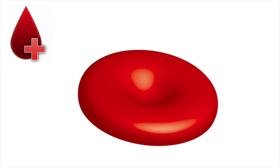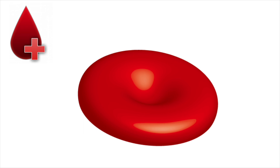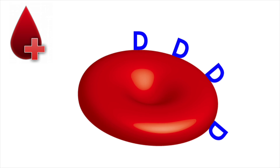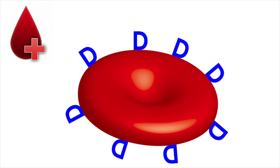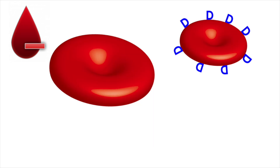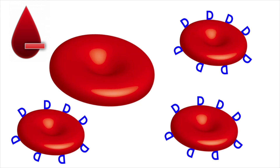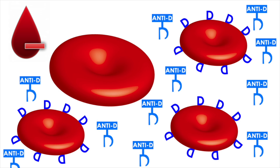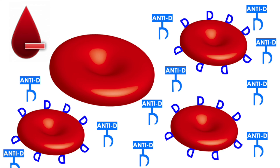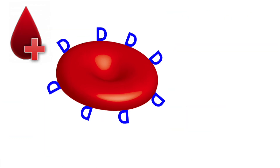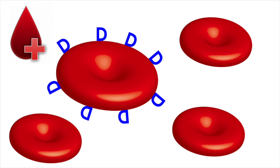Positive blood has a third antigen type on its cell membrane, sometimes referred to as the rhesus factor and sometimes referred to as the D antigen. Negative blood does not have the D antigen, so if it's exposed to positive blood with the D antigen, it may elicit an immune response that causes anti-D antibodies to be produced, attacking the positive blood and causing clotting. Positive blood has the D antigen, so if exposed to negative or positive blood, it will not elicit an immune response.